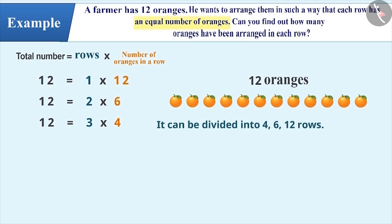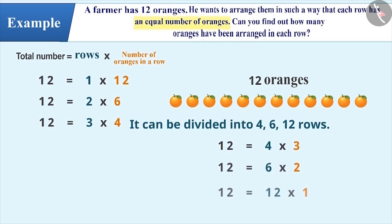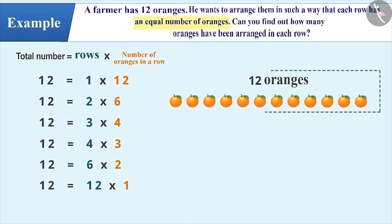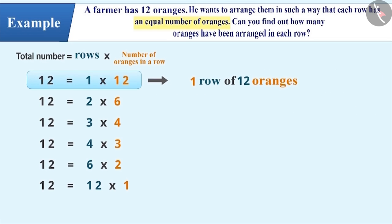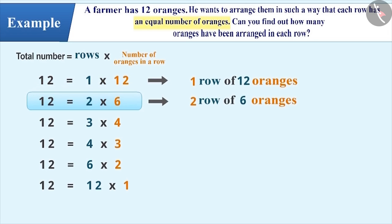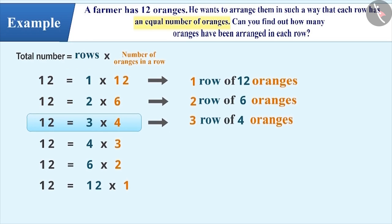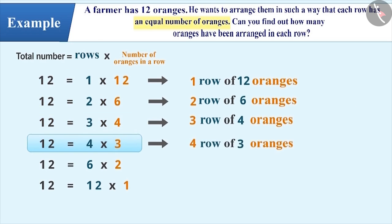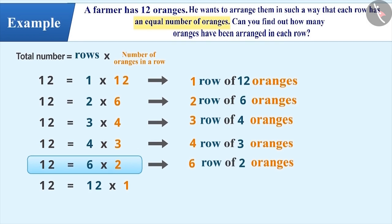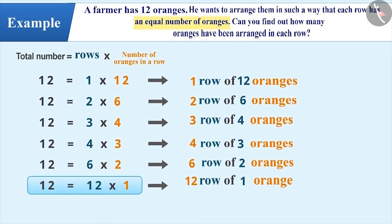Similarly, we can divide 12 oranges in 4 rows, 6 rows, and 12 rows. We can form 1 row of 12 oranges, 2 rows of 6 oranges, 3 rows of 4 oranges, 4 rows of 3 oranges, 6 rows of 2 oranges, and 12 rows of 1 orange. These are the only possible ways to arrange them.